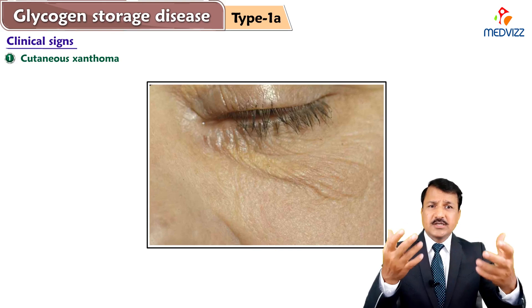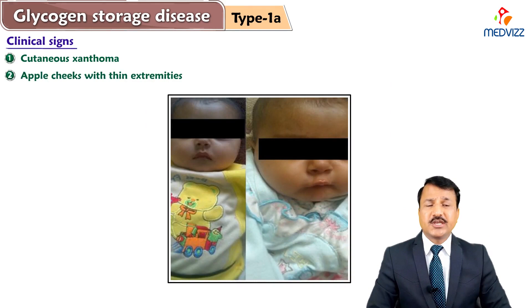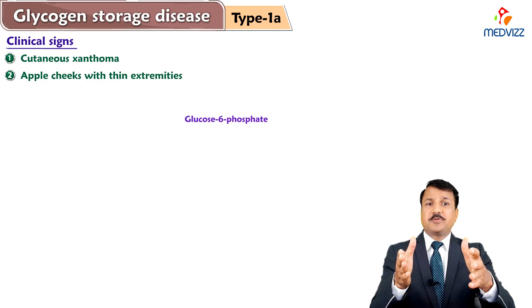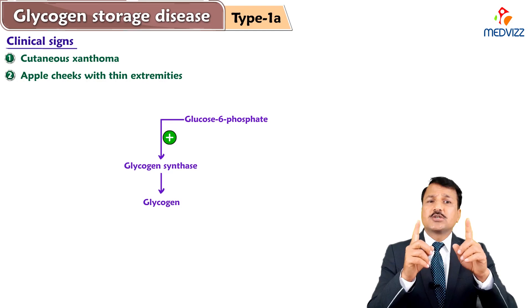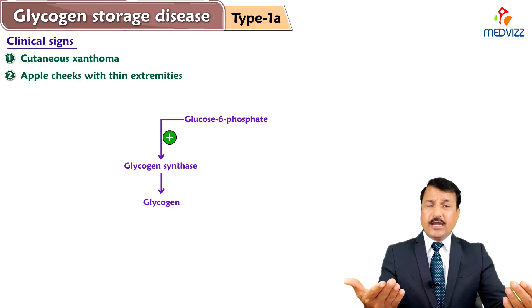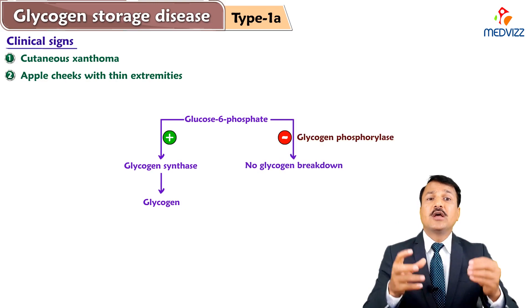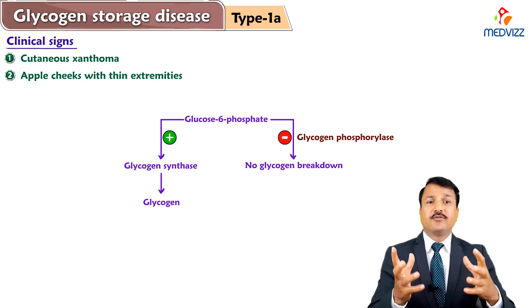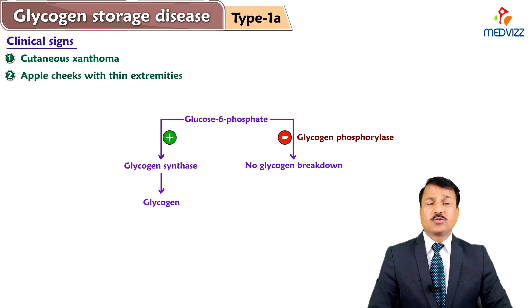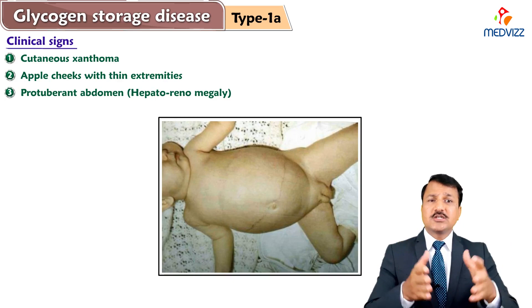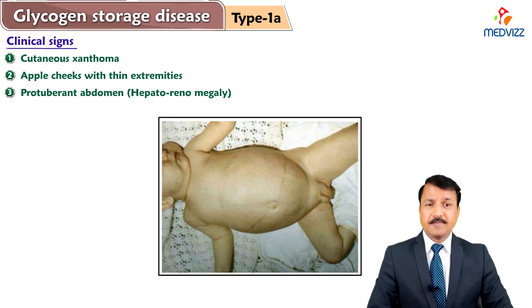Von Gierke patients — particularly children — will show full cheeks, called apple cheeks or chubby cheeks, along with thin extremities, representing an abnormal fat distribution. These patients will also show accumulation of glycogen in the liver and kidney, because elevated glucose-6-phosphate positively activates glycogen synthase enzyme while negatively affecting glycogen phosphorylase. Thereby, more glycogen is synthesized and glycogen degradation decreases. More glycogen accumulates in the liver and kidney, giving rise to hepatomegaly and renomegaly — that is why Von Gierke Disease is referred to as hepatorenal glycogenosis, presenting with a protuberant abdomen.